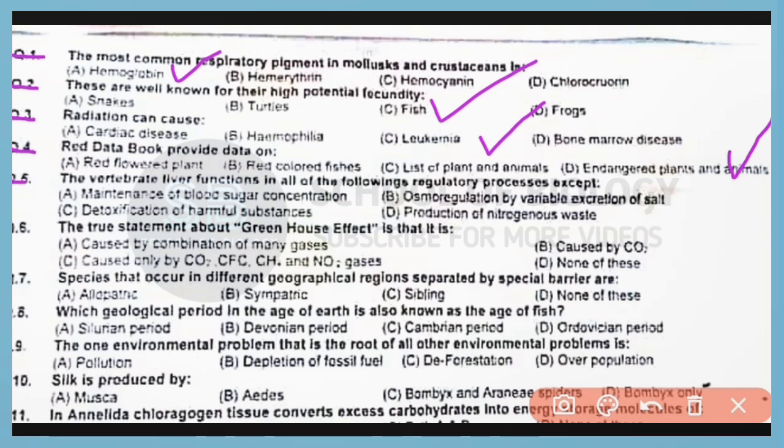Question number 5. The vertebrate liver functions in all of the following regulatory processes except osmoregulation by various excretion of salts, which is not a function of vertebrate liver. Correct answer is option B.